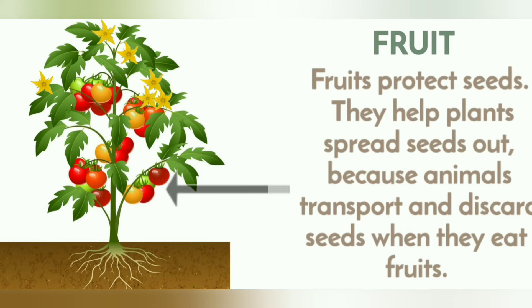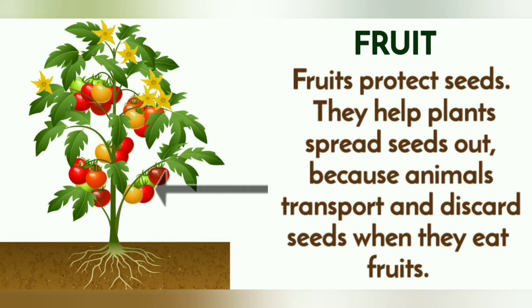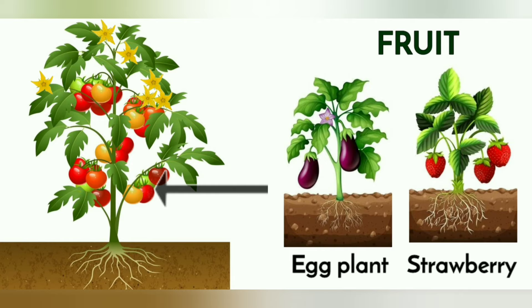Fruit protect seeds. They help plants spread seeds out because animals transport and discard seeds when they eat fruits. Some examples of fruits we eat are eggplant and strawberry.